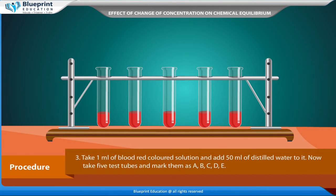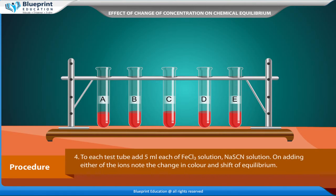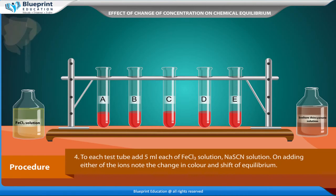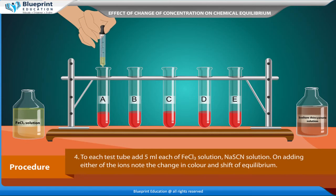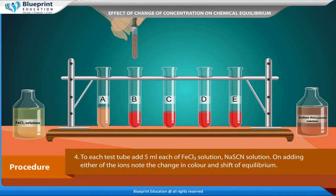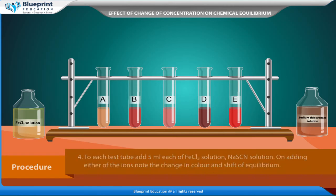Take 5 test tubes and mark them as A, B, C, D, and E. To each test tube, add 5 ml each of FeCl₃ solution and NaSCN solution. On adding either of the ions, note the change in color and the shift of equilibrium.